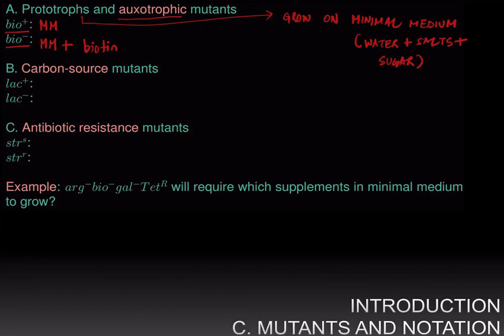Another category of mutants are called carbon source mutants, which is these mutants lack the ability to utilize a particular carbon source, a particular sugar, for nutrition. A wild type will grow in medium with lactose as the only sugar, as the only carbon source, whereas the mutant lac minus will not grow in a medium with lactose, and will require medium with some other sugar. It's going to die if you try to grow it in a medium that has only lactose as a carbon source.